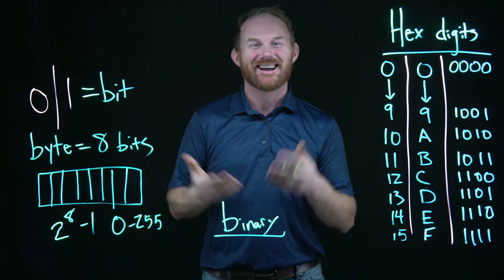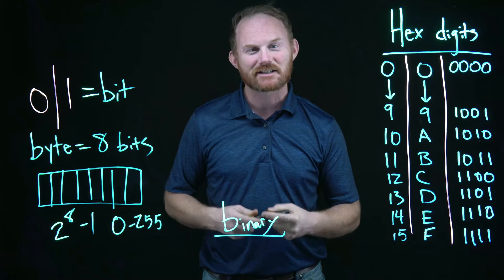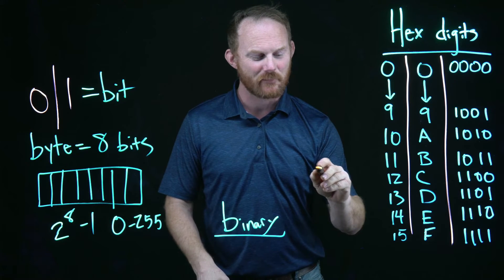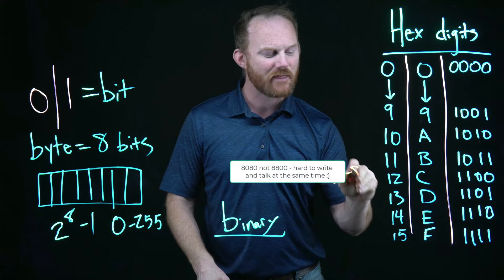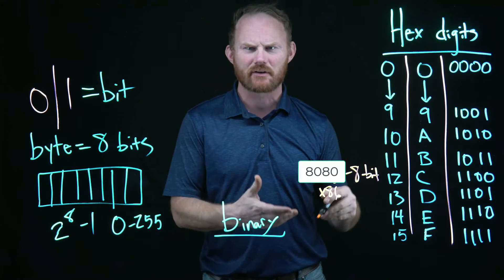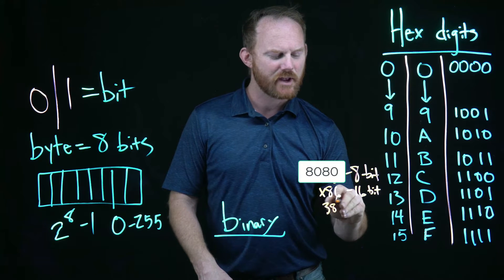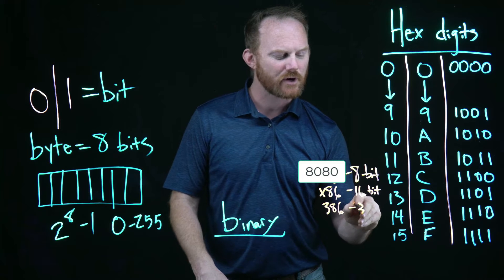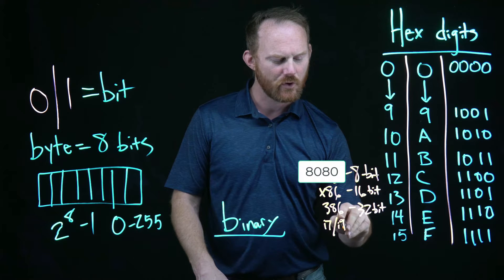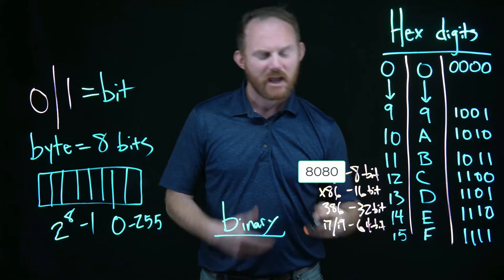Why eight bits and not something else? When Intel started making their processors, they made the 8800 series — an eight-bit CPU. Then came the x86, which was 16-bit. Then the 386, which was 32-bit. And now we're on i7s and i9s, which are 64-bit. Eight, 16, 32, 64 — these are all factors of eight. The architectures have just followed this pattern, and the next size would be 128-bit.